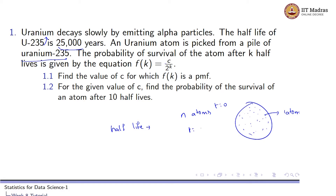So when time t equals 25,000 years, the number of atoms of uranium would be equal to n/2. After 50,000 years, this n/2 reduces further to n/4. And after 75,000 years, it will reduce to n/8 — that is n/4 divided by 2, which is n/8. So this is what half-life means.